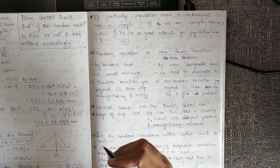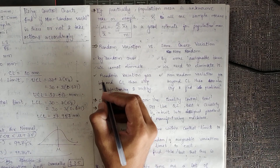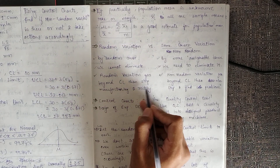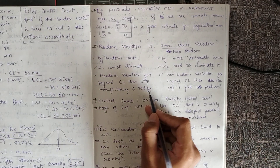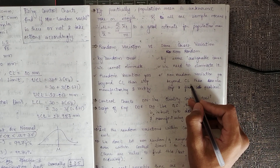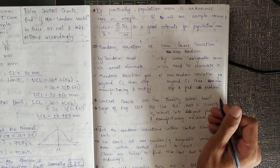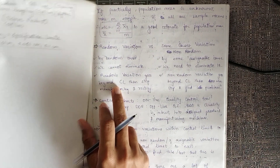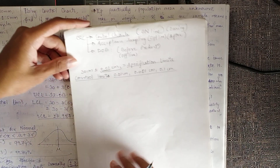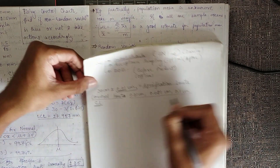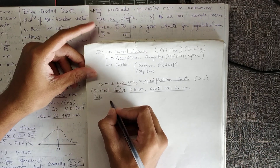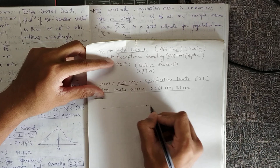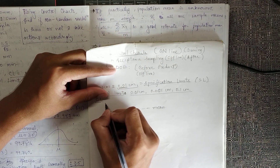The total variation can be reduced as much as possible. If random variation goes beyond the control limit, stop manufacturing and rectify. If non-random variation goes beyond the control limit, also stop the manufacturing process. So we define control limits — the center line (CL) and specification limits (SL). In any manufacturing process there will be a mean, an upper control limit, and a lower control limit.